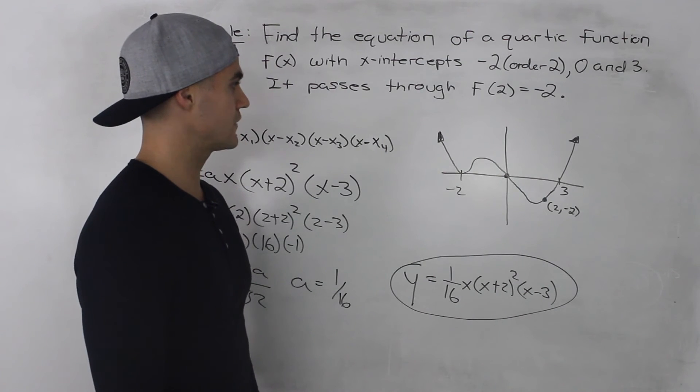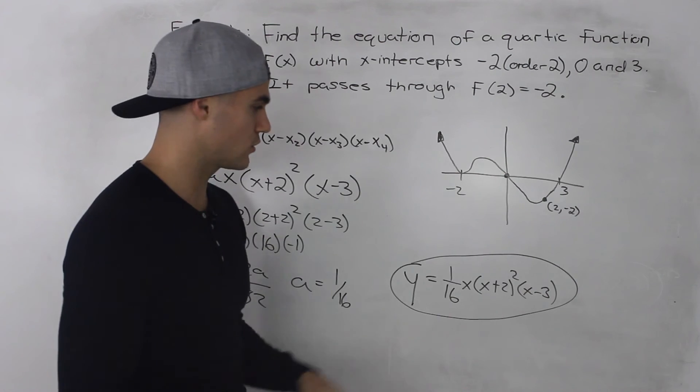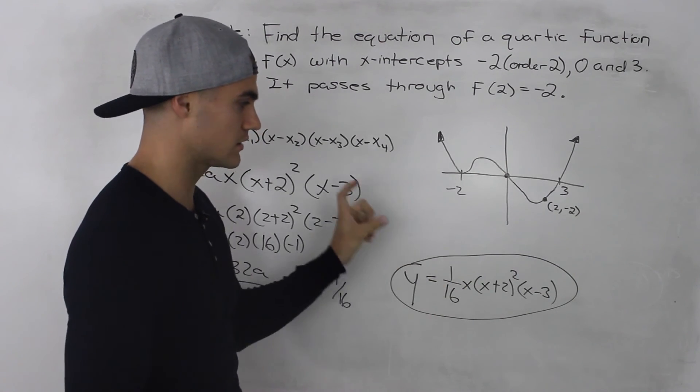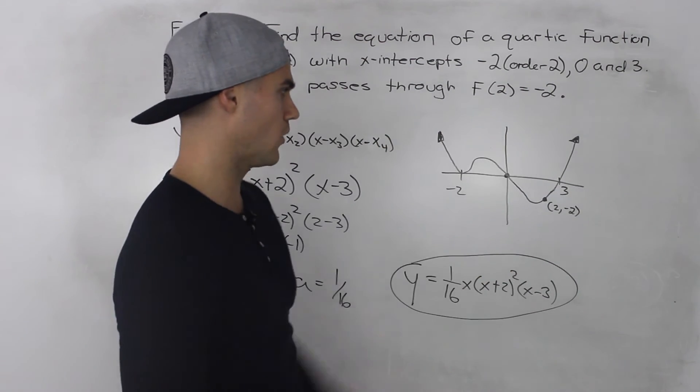Now to show this graphically, since this is a quartic function with a positive leading coefficient, if we were to expand this, the leading coefficient will be positive. It has end behaviors from quadrant 2 to quadrant 1.